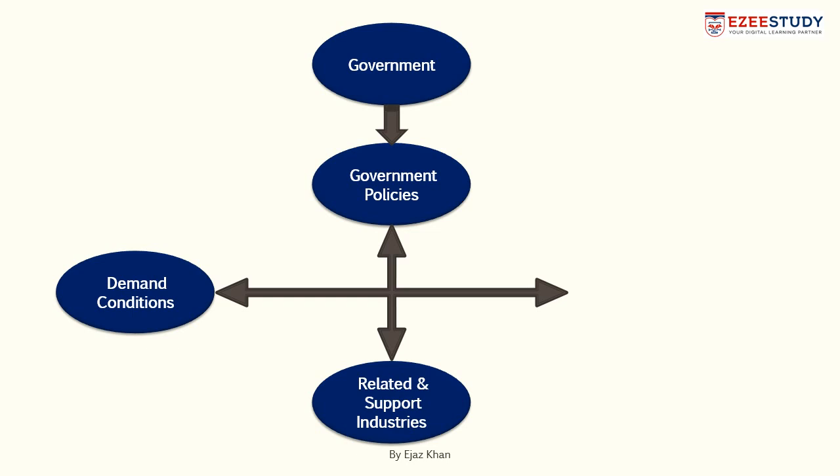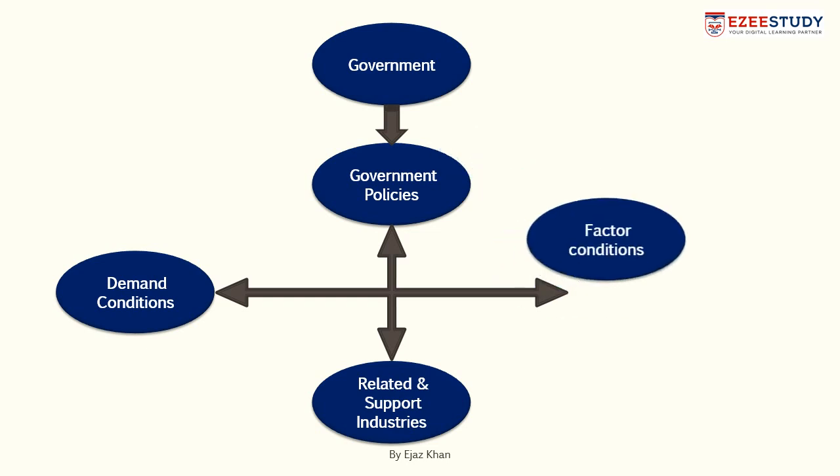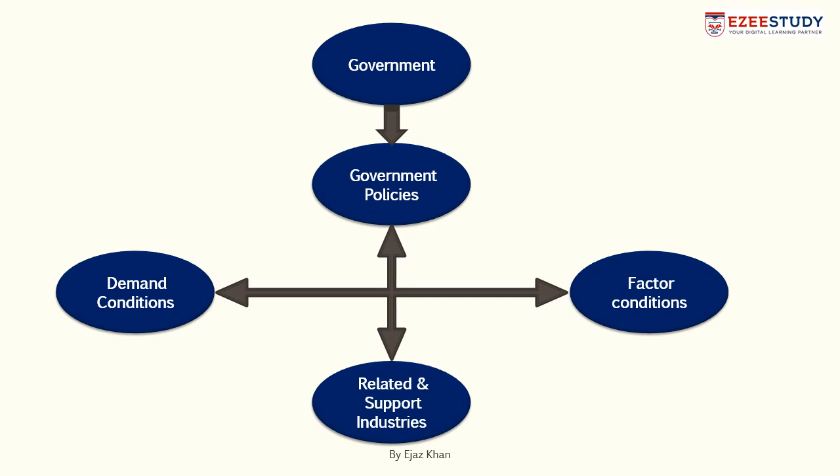The government will always have the role of creating support industries. For example, if the government wants to increase the competitive advantage of local electronic device manufacturers, they may support software houses — they may give subsidies or tax relief to software houses so that they gain the abilities to produce software that can be used in those electronic devices. They will also have their role to play in creating factor conditions, like setting up universities that will produce IT specialists, engineers, and doctors. So the government plays a vital role in developing skilled labor that can be used in other industries to gain competitive advantages.